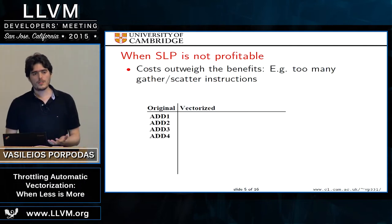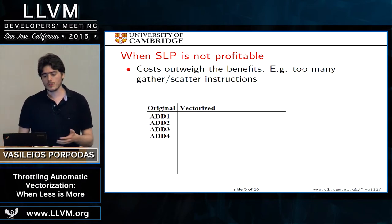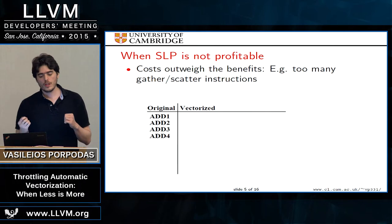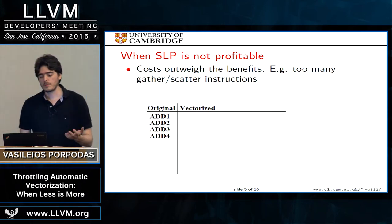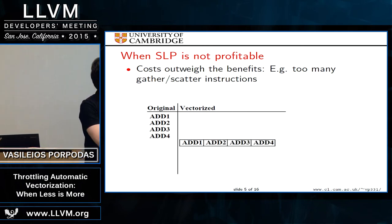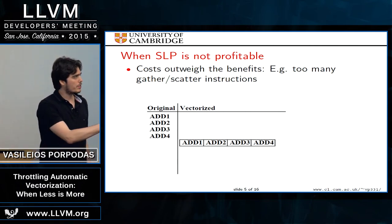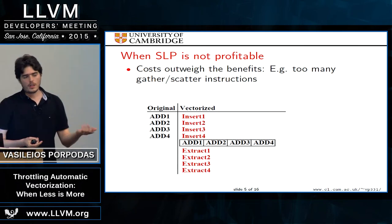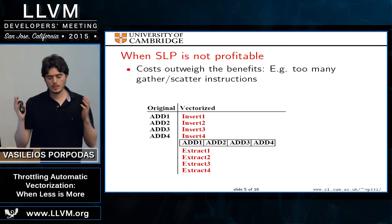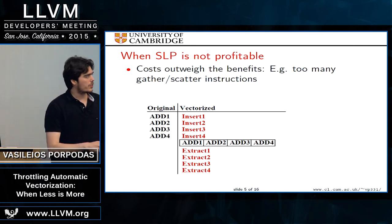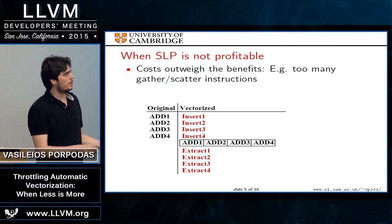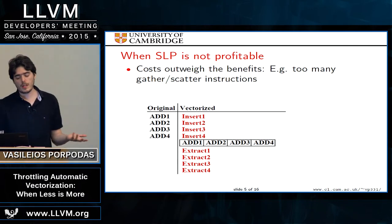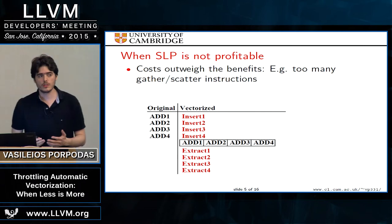There are many overheads associated with vectorization, so SLP does not always work as expected. These costs relate to how the vectorizer expects data to be placed on the hardware. For example, four scalar add instructions could potentially be combined into one vector instruction, but the inputs and outputs may require many insert and extract instructions to place data correctly. Originally four scalar instructions could become eight scalar plus one vector instruction — obviously not beneficial.